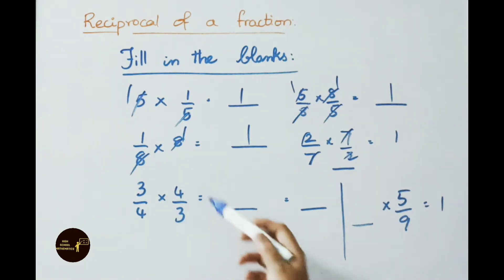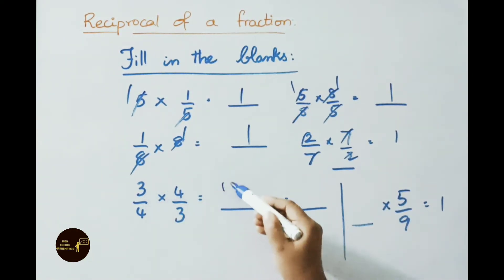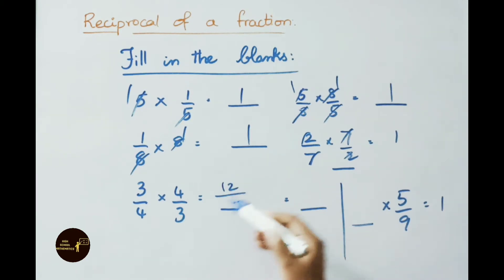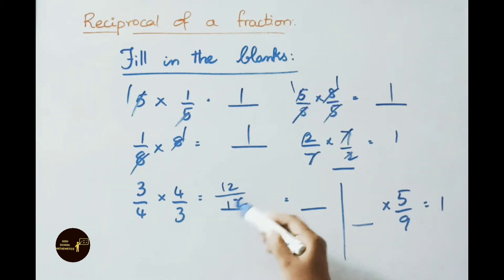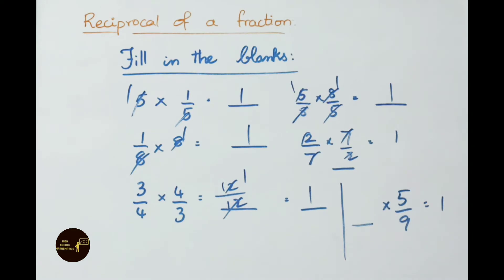See the next one: 3/4 reciprocally is 4/3. Multiply the numerators: 3 × 4 = 12, and 4 × 3 = 12. So 12/12 = 1 time cancelled. The answer is 1.